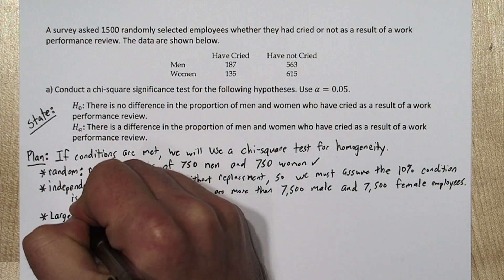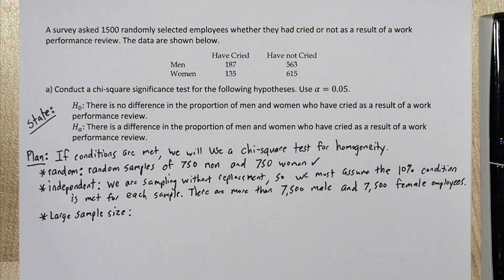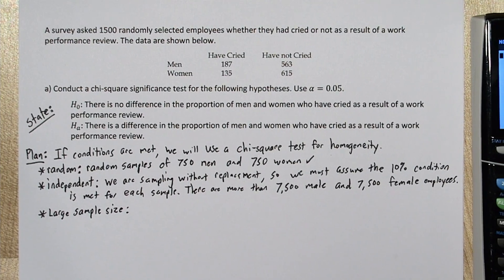For the large sample size condition, we need to check that all of our expected cell counts are at least 5. So we could do this by doing row total times column total divided by table total for each cell, or we can do it with matrices on the calculator. So here's how to do that.